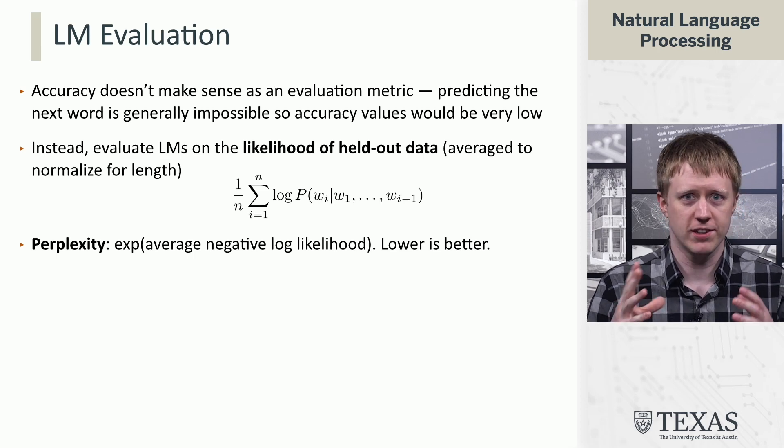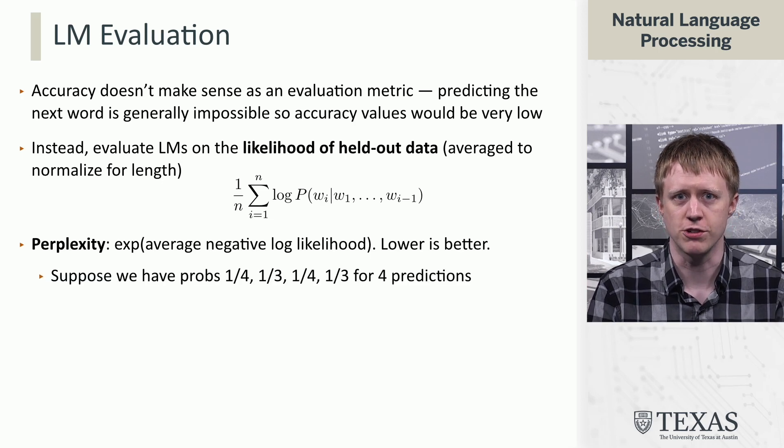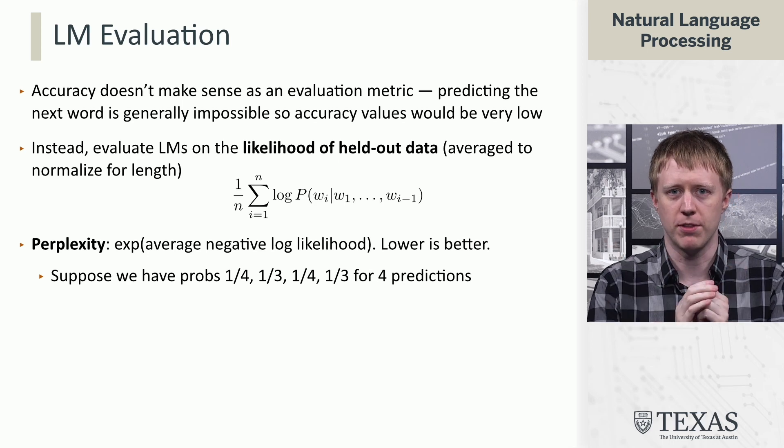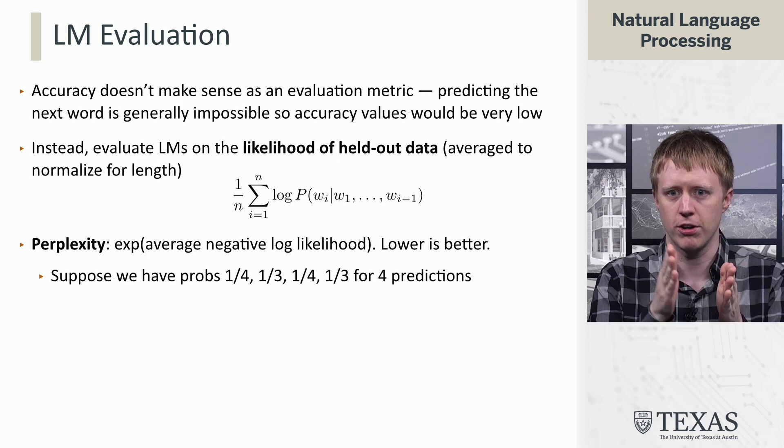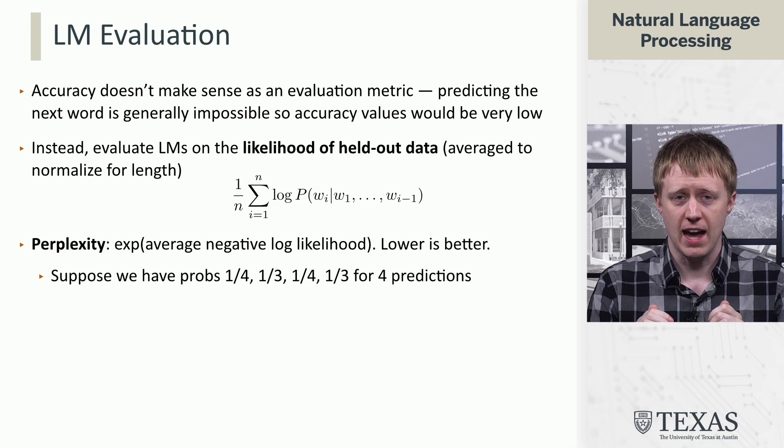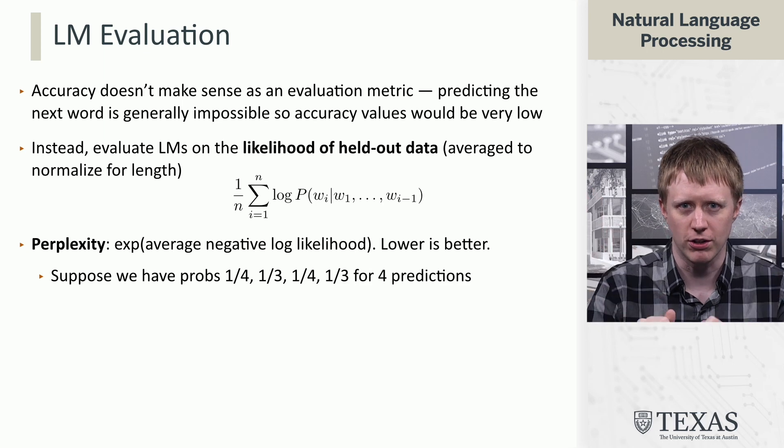Now, you might think, okay, this is just this weird transformation. Perplexity actually has a nice interpretation, which is that suppose that we're predicting all four words, and we give them probabilities a quarter, a third, a quarter, a third. Now, the perplexity has an interpretation of the average branching factor of this model.